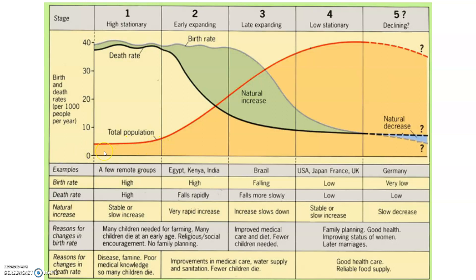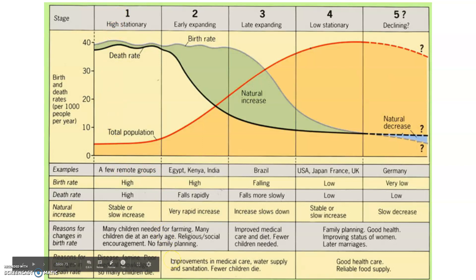For instance, in our historical human population growth, this was the thousands of years before the Industrial Revolution — the whole world was pretty much at this growth rate. And nowadays, if there are any countries in this stage, it's very remote groups or very uncivilized societies.